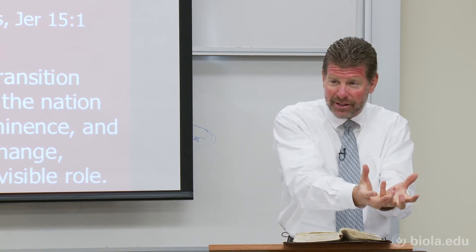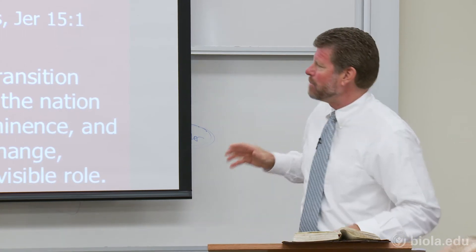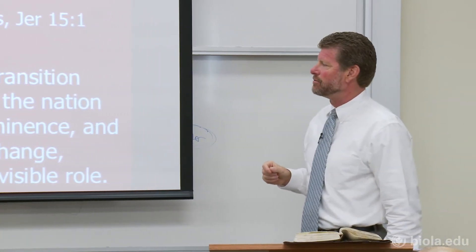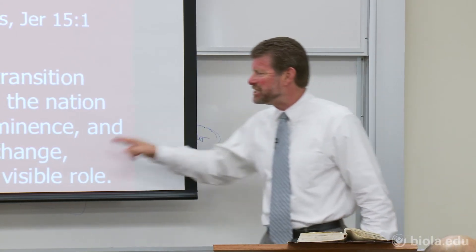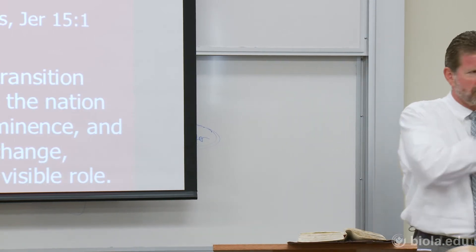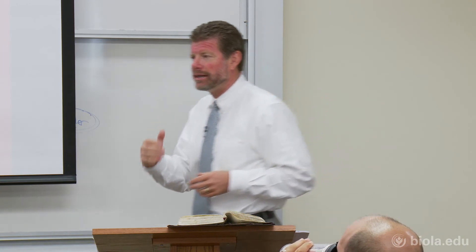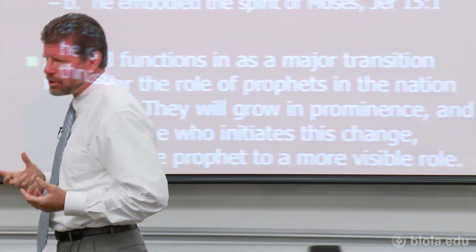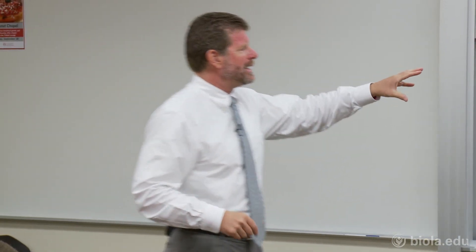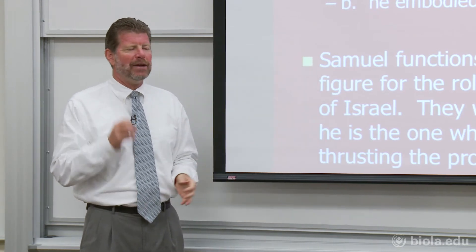As the first prophet proper, Samuel has a ministry to individuals as well as to the nation — sometimes he goes to someone specifically, sometimes his proclamation is to the nation. Samuel functions as a major transition figure for the role of prophets in the nation of Israel. They will grow in prominence, and he's the one who initiates this change, thrusting the prophet to a more visible role. Even during Joshua and Judges there was not a lot of prominence. But now all of a sudden Samuel comes to the forefront, and he's going to be a prophet with some kind of prominence — not in the background but forward, much like Moses was forward.